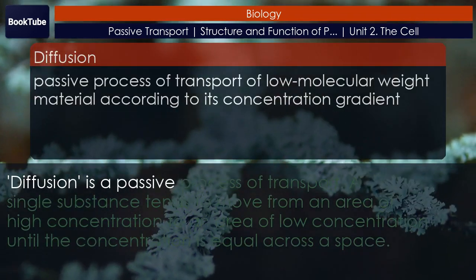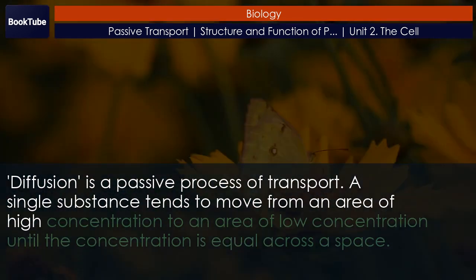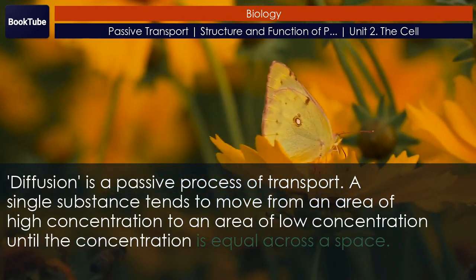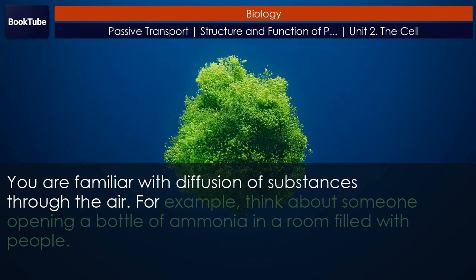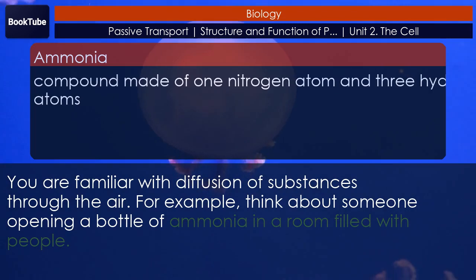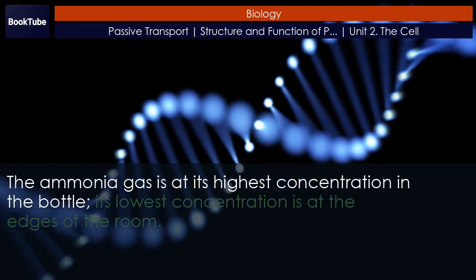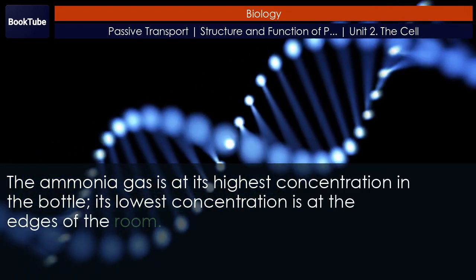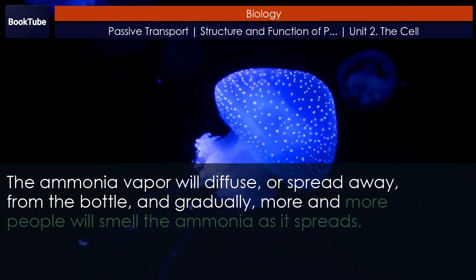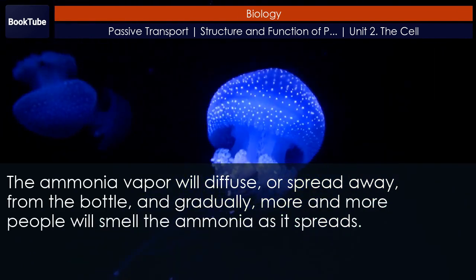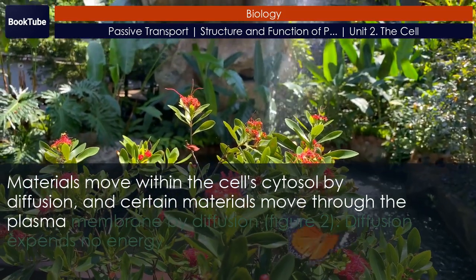Diffusion is a passive process of transport. A single substance tends to move from an area of high concentration to an area of low concentration until the concentration is equal across a space. You are familiar with diffusion of substances through the air. For example, think about someone opening a bottle of ammonia in a room filled with people. The ammonia gas is at its highest concentration in the bottle and its lowest concentration is at the edges of the room. The ammonia vapor will diffuse or spread away from the bottle, and gradually more and more people will smell the ammonia as it spreads. Materials move within the cell's cytosol by diffusion, and certain materials move through the plasma membrane by diffusion.